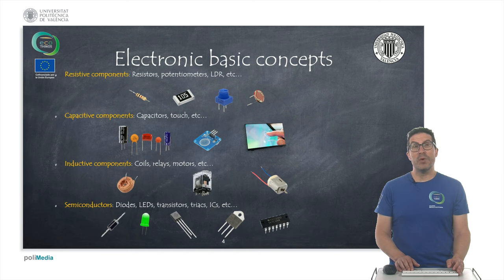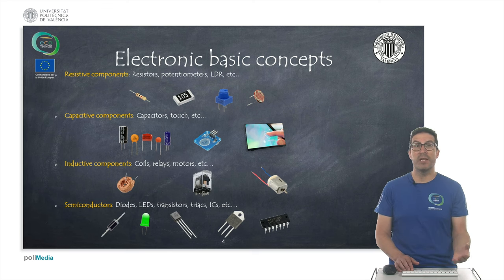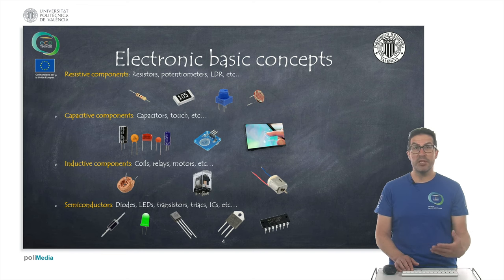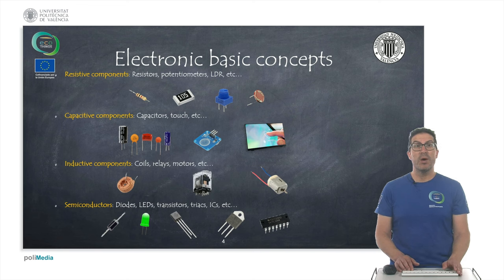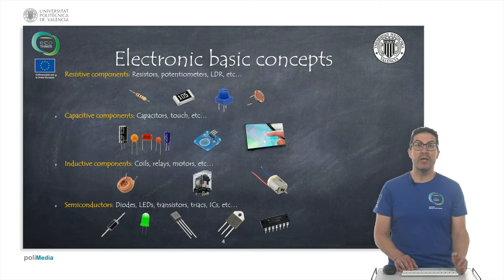In electronics we find different kinds of components. One of the classic ones are resistive components — fixed value resistors, potentiometers that can vary, and resistive sensitive sensors such as an LDR. We also find components with capacitive characteristics like capacitors, which can be used for instance in touch screens. Inductive components like coils, relays, and motors are also very classic. And finally, one of the most important are semiconductors, which include diodes, LEDs, transistors, and integrated circuits.